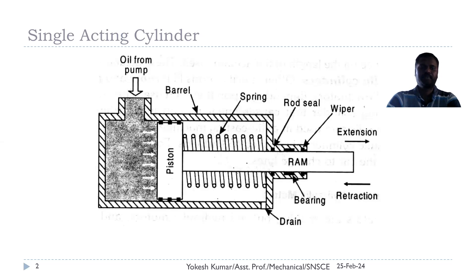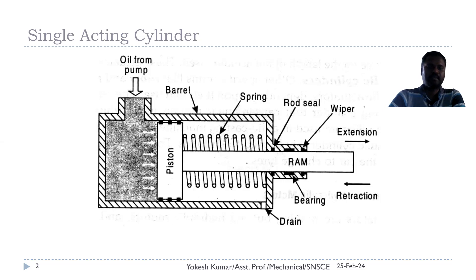Inside the barrel, we have a piston which is in close contact with the barrel or shell of the cylinder, operated to very close dimensional tolerances. The piston diameter is slightly less than the inside diameter of the barrel — a small clearance is provided to enable linear motion of the piston. There may be a chance of oil leakage past the piston, so to avoid this, the piston is surrounded with oil seals which prevent leakage of oil.